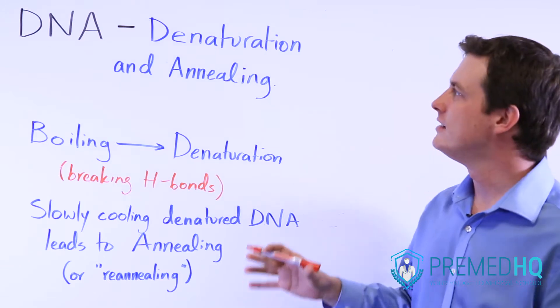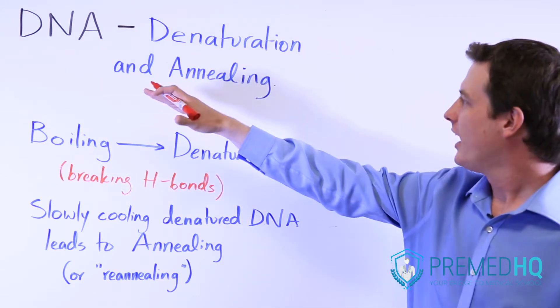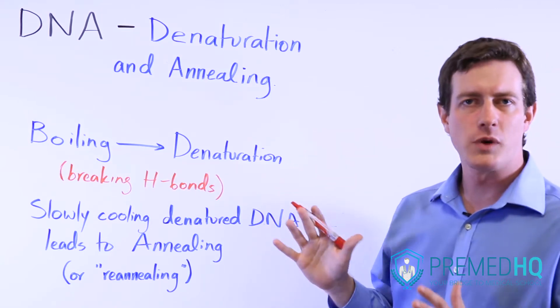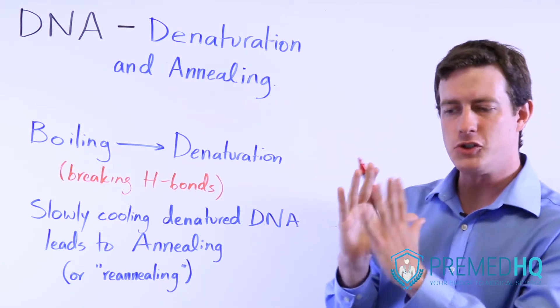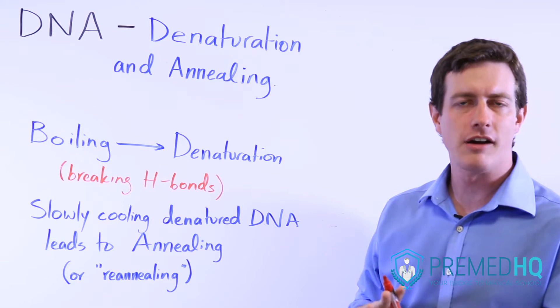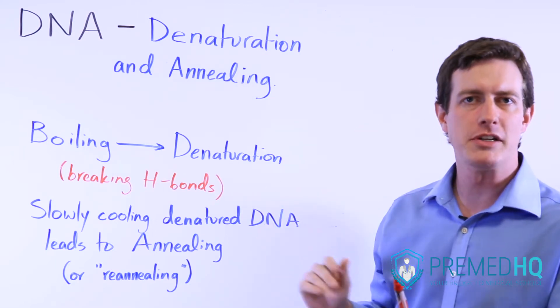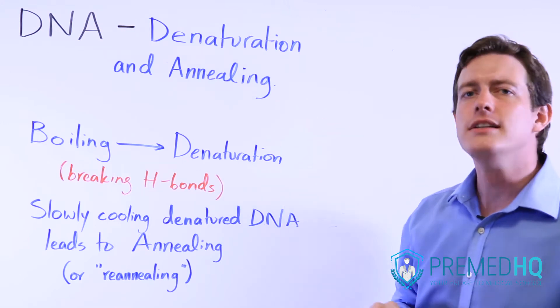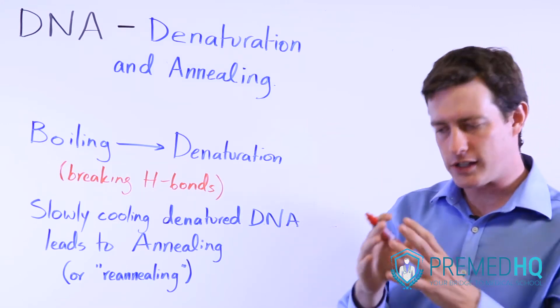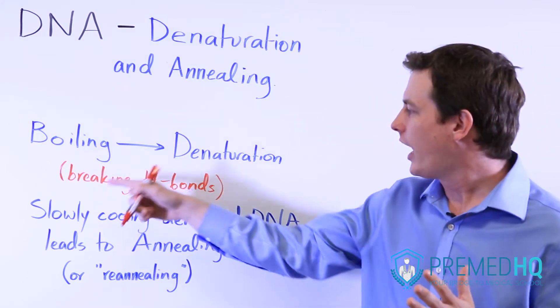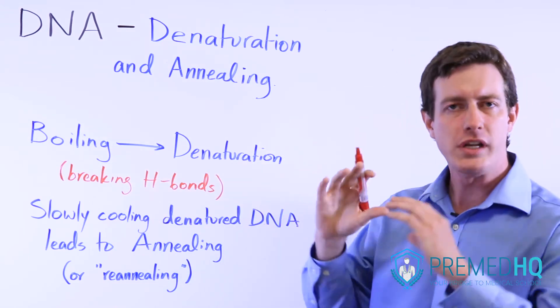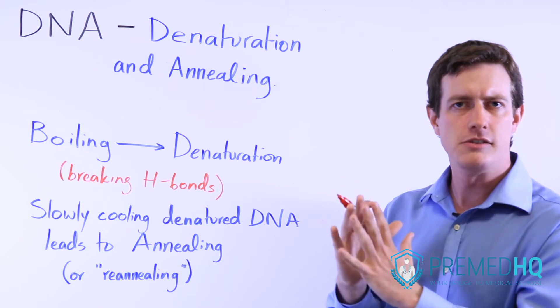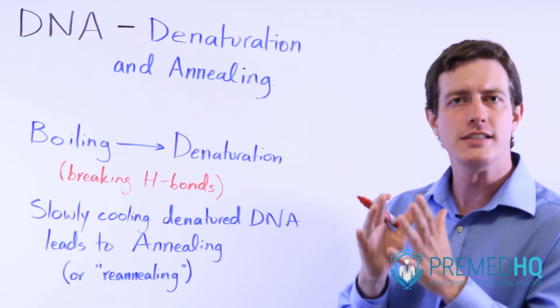Just a quick note on DNA denaturation and annealing. Denaturation occurs when you have a joined helix - a strand and its complementary strand joined together forming a helix. Denaturation essentially means that you break apart the hydrogen bonds between those base pairs that hold the double-stranded DNA intact.